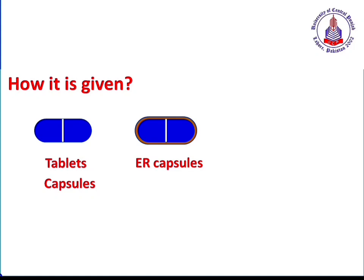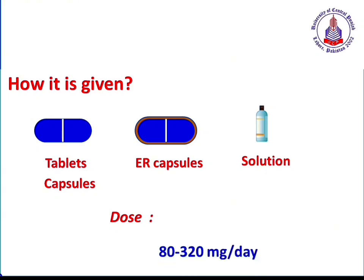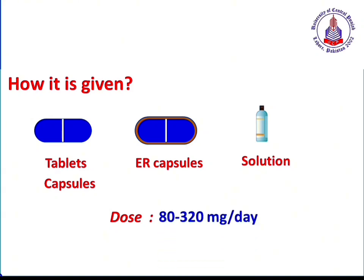Propranolol is available in tablet form as well as capsules, and also as extended-release capsules where the drug is slowly released. It is also available as an oral solution. The dose of propranolol depends on the type of clinical indication. For some cardiac disorders, it may be started at an initial dose of 80 mg, but for more severe disorders this dose may be increased. The general dosage range is variable, typically 80 to 320 mg per day, given in divided doses.